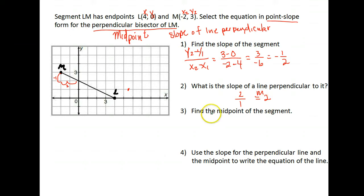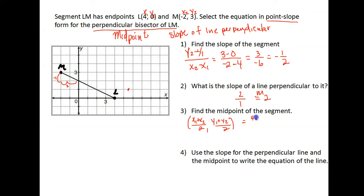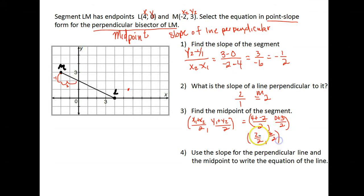Now let's find the point we're going to use — the midpoint — since this is a bisector and it needs to go right through the middle of the line. Remember the midpoint formula: add the x's and divide by 2, add the y's and divide by 2. That gives us 4 plus negative 2 over 2, and 0 plus 3 over 2. Simplifying: 2 divided by 2 is 1, and we'll leave the y as 3 halves. So our midpoint is (1, 3/2).